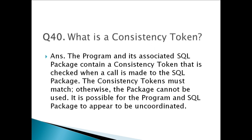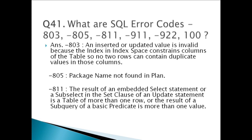At pre-compile time, the DB2 pre-compiler places a consistency token in both the host application code for compilation and the DBRM that will be bound. At execution time, if these tokens do not match, DB2 gives an SQL code -805. The consistency token is in both the load module and the DB2 catalog and must match.